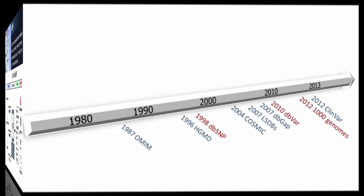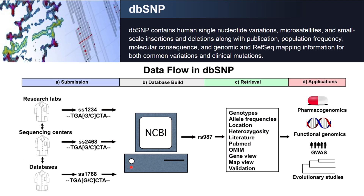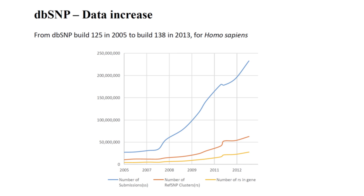Finally, in 2004, the COSMIC database was created to contain somatic mutations discovered in tumors. Now let's look at some of these databases in greater detail. dbSNP was created in September 1998 by NCBI, the National Center for Biotechnology Information, in collaboration with NHGRI, the National Human Genome Research Institute. As a central repository, dbSNP contains most of the human genetic variations identified so far in both healthy and sick individuals. As this figure shows, the amount of data in dbSNP has been increasing rapidly over the years.